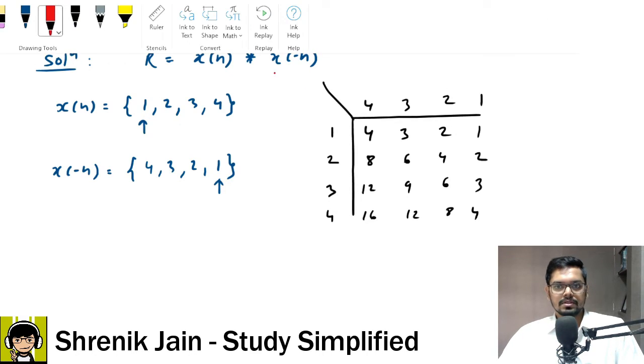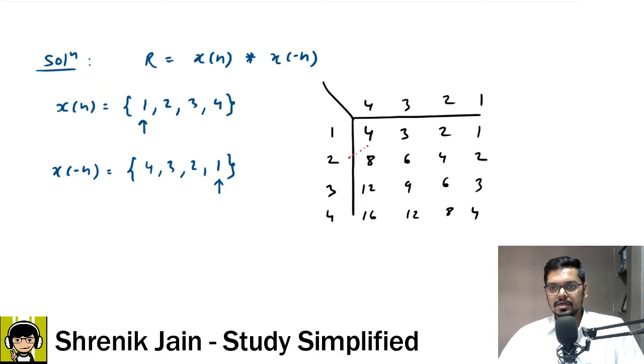Now, what's next? What's next? All the elements in this area should be added. So, only 4 is there. All the elements in this area should be added. So, 8 plus 3, in this we have 12 plus 6 plus 2 and then we have 16 plus 9 plus 4 plus 1. Then we have 12 plus 6 plus 2, then we have 8 plus 3 and finally we have 4.